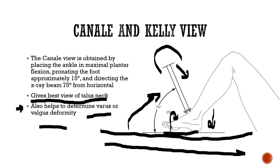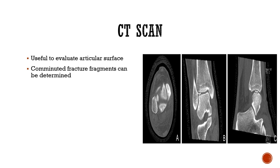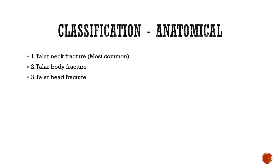A CT scan can be ordered if there is doubt regarding injury to the articular surface of the talus and tibia, or if dealing with a comminuted fracture. You can see all fragments properly on CT and plan your treatment — a small fragment visible on CT may not always be visible on X-ray.